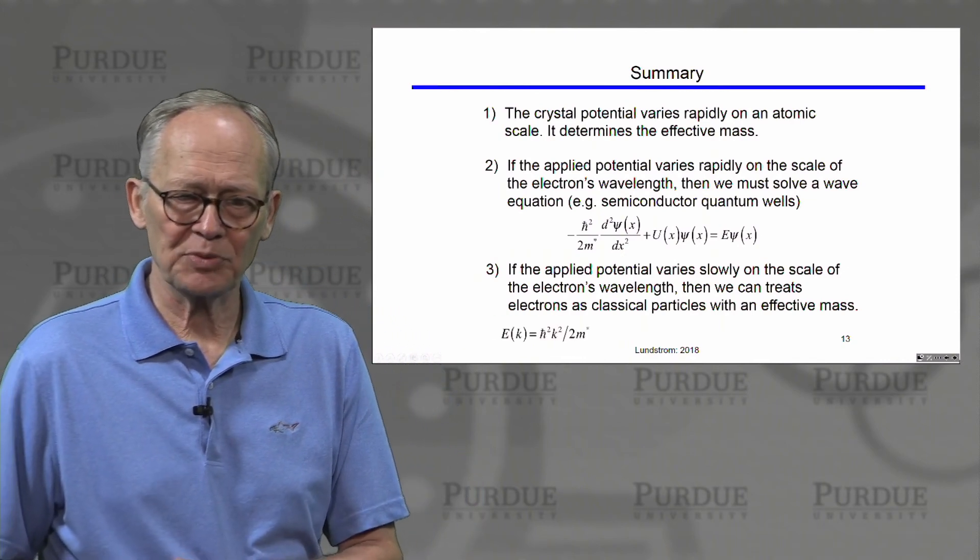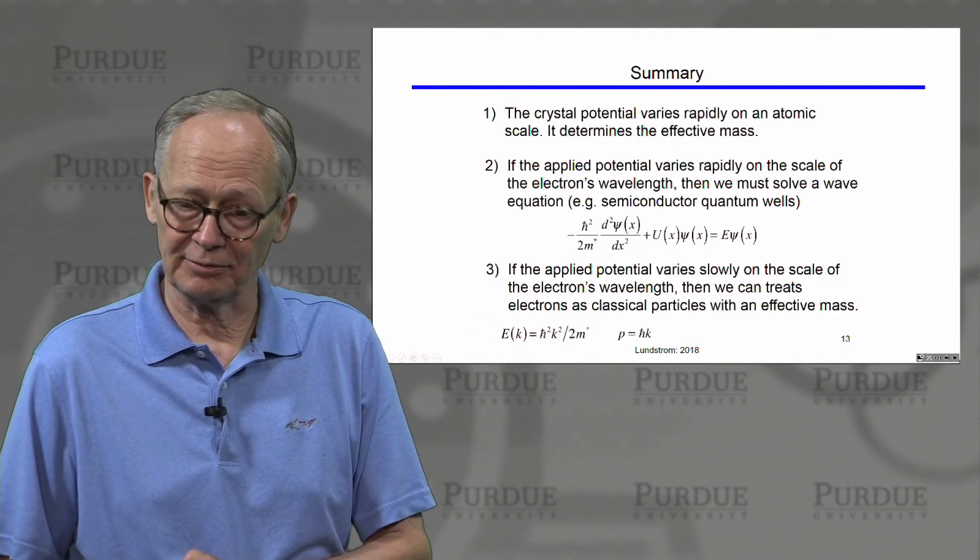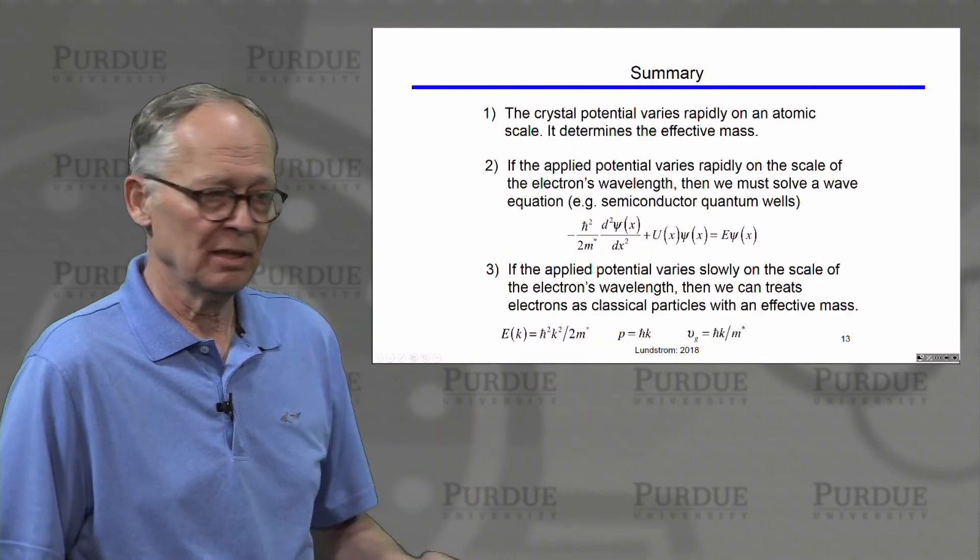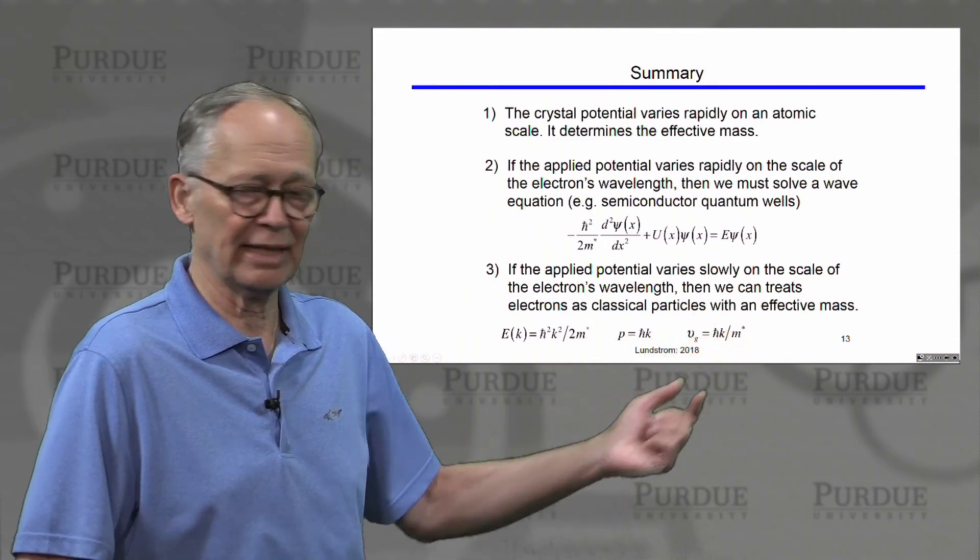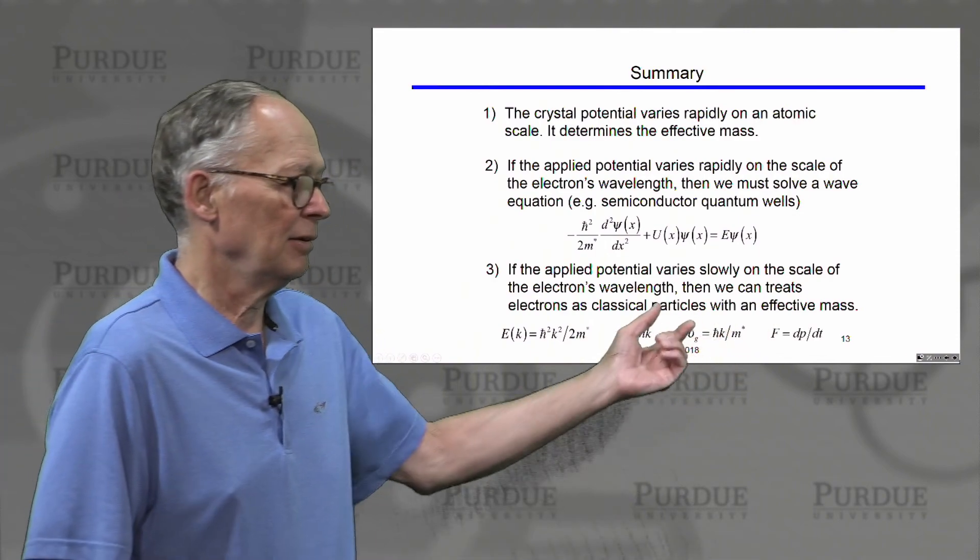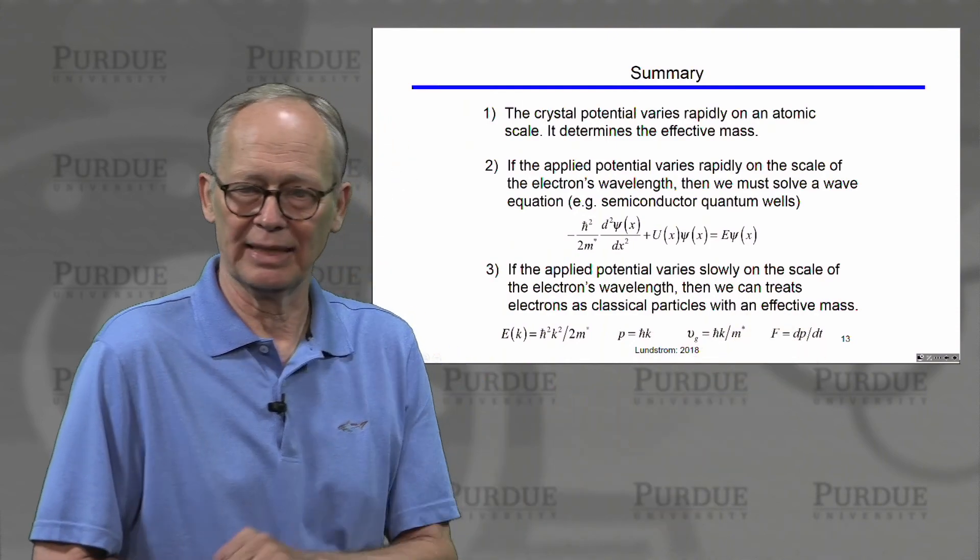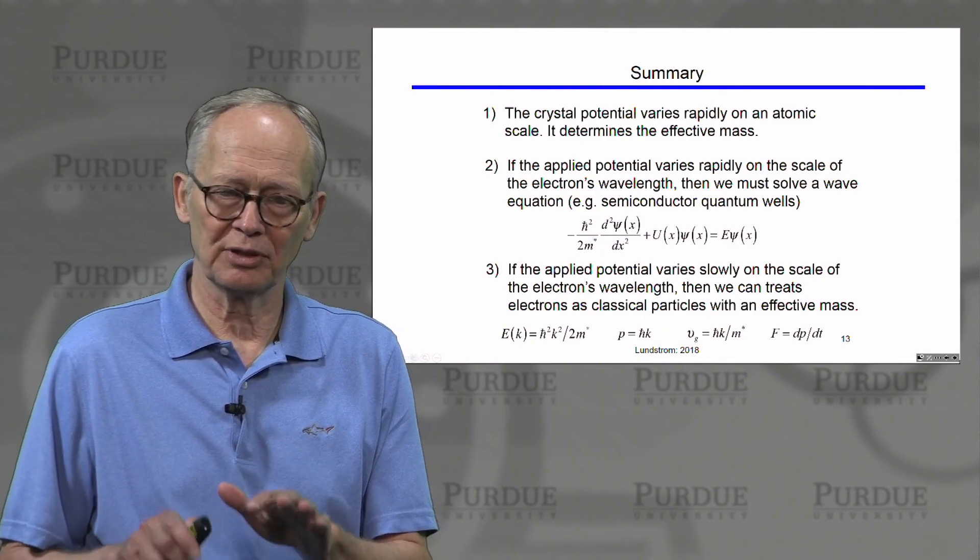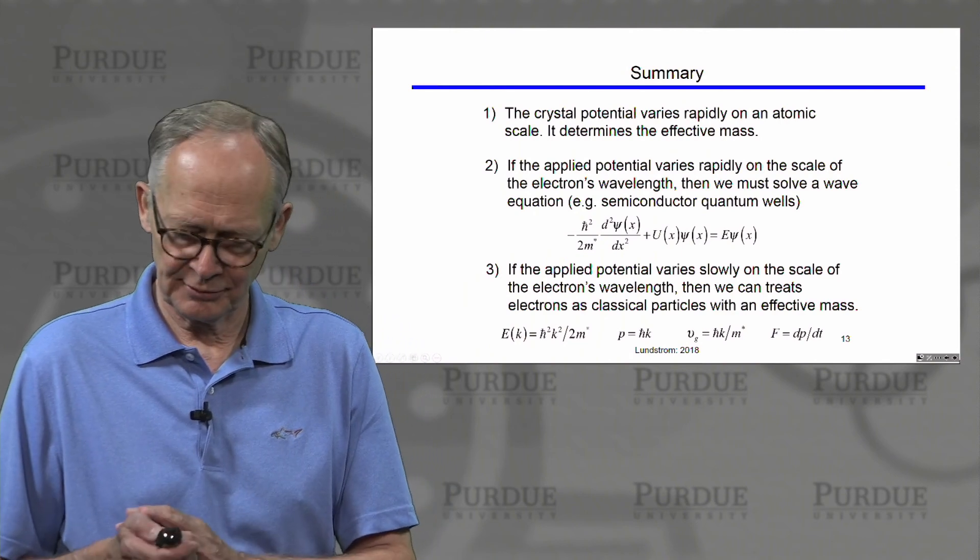So the description then is energy is h bar squared k squared over two times that effective mass. Crystal momentum is h bar times k. Group velocity of the electron wave packet is crystal momentum divided by effective mass. Force is derivative of h bar times k divided by dt. So this simple description of particles we refer to as the semi-classical treatment of electrons.